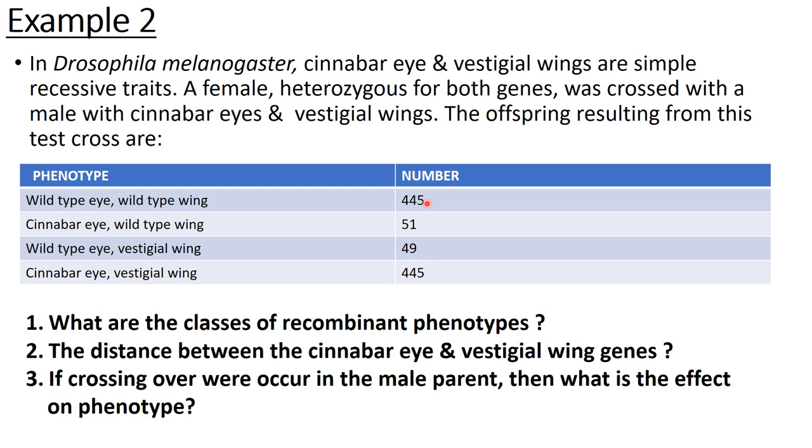First you look at parental - which one will be parental, which number will be parental, which phenotype will be parental? This one and this one. In the data given to us, whichever number is highest, that's in highest frequency, that one is parental. And which is in lowest number, less number compared to others, that one is recombinant.